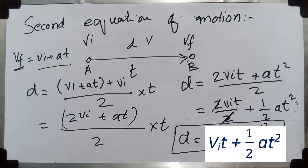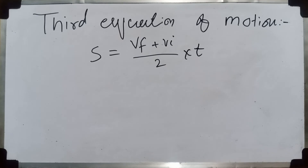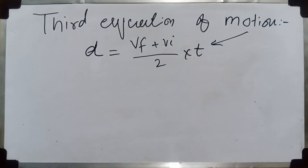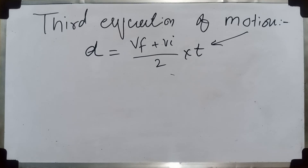Let's move forward and derive the third equation of motion. As we saw during the derivation of the second equation, we had the expression using average velocity multiplied by time to find distance. But what if we have a problem where we don't know the time, but we know the other quantities and need to find one unknown?